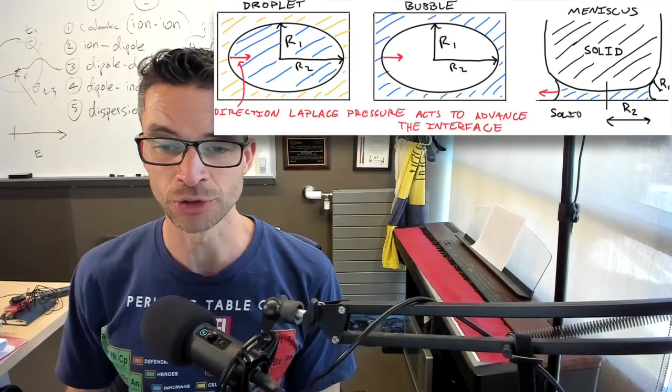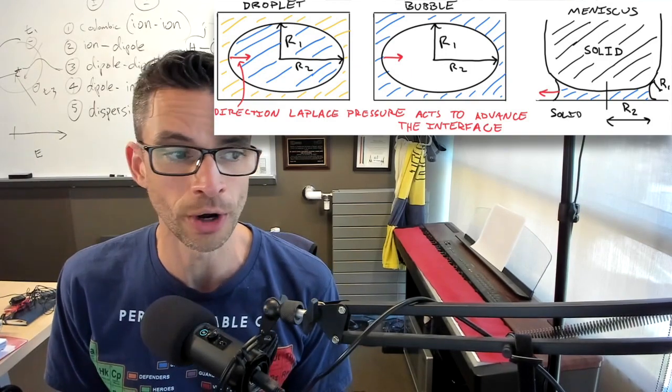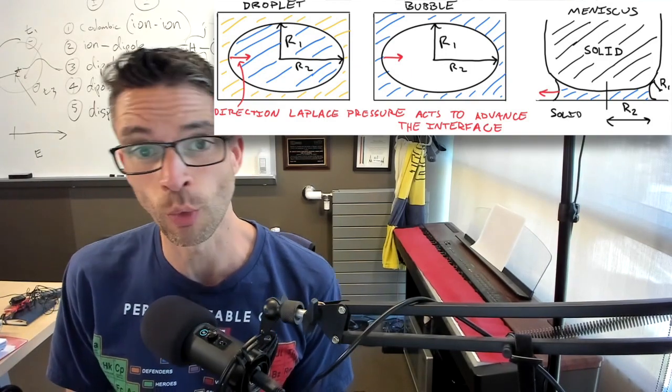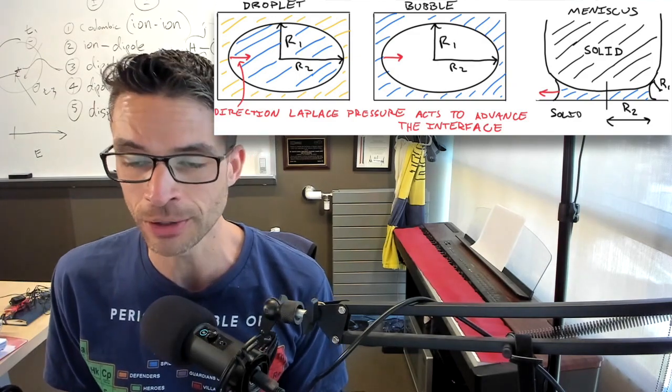So a droplet, that is, it could be oil or water inside water or oil to get a droplet, or it could be a bubble.